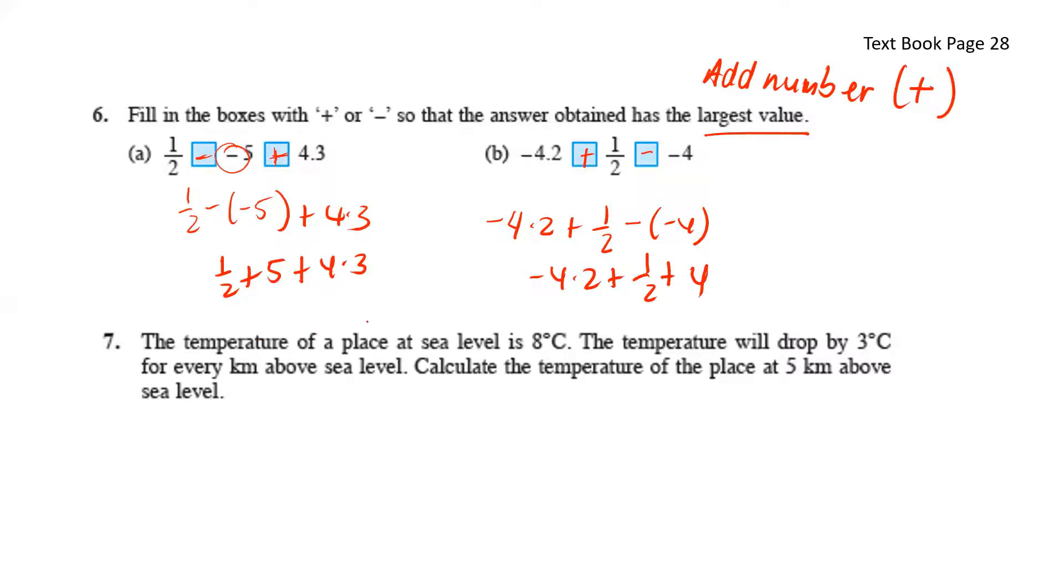The temperature of a place at sea level is 8 degrees Celsius. The temperature will drop by 3 degrees Celsius for every kilometer above sea level. Calculate the temperature of the place at 5 kilometers above sea level. Here we have sea level, which is at 8 degrees Celsius.